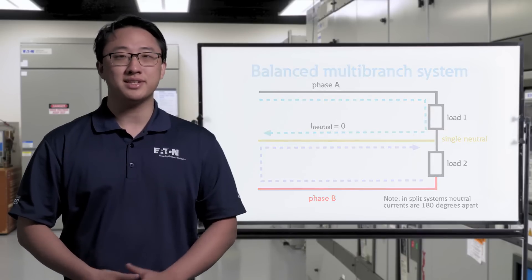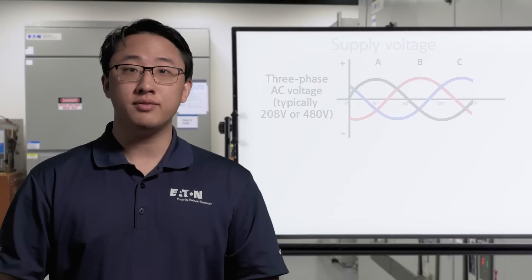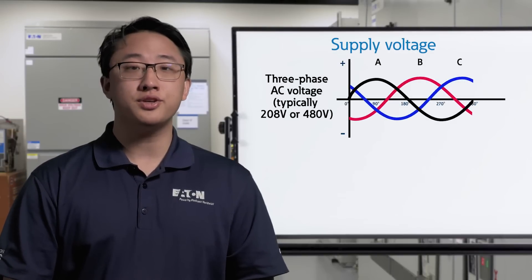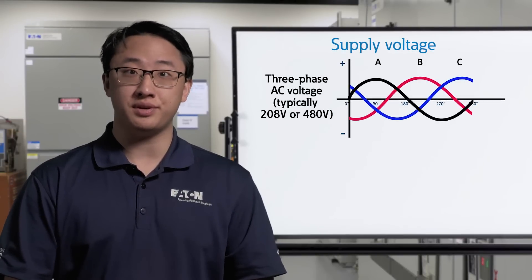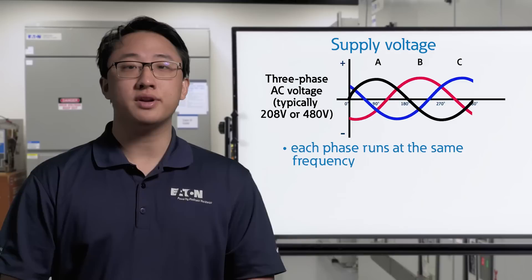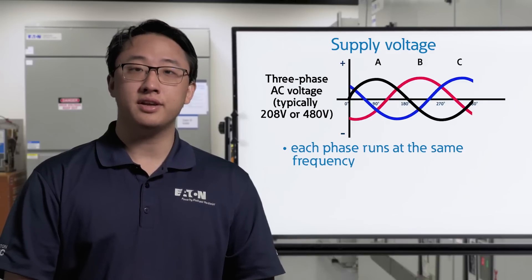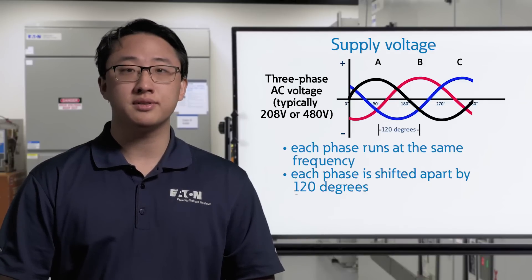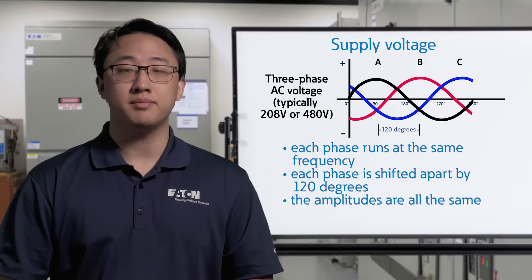Let's go back to the graphs to make sense of this. Looking at the supply voltage for a three-phase system, the relation between the three phases is important to see. First, they all run at the same frequency. Second, they're shifted apart 120 degrees. And third, the amplitudes are the same, meaning that they're balanced.